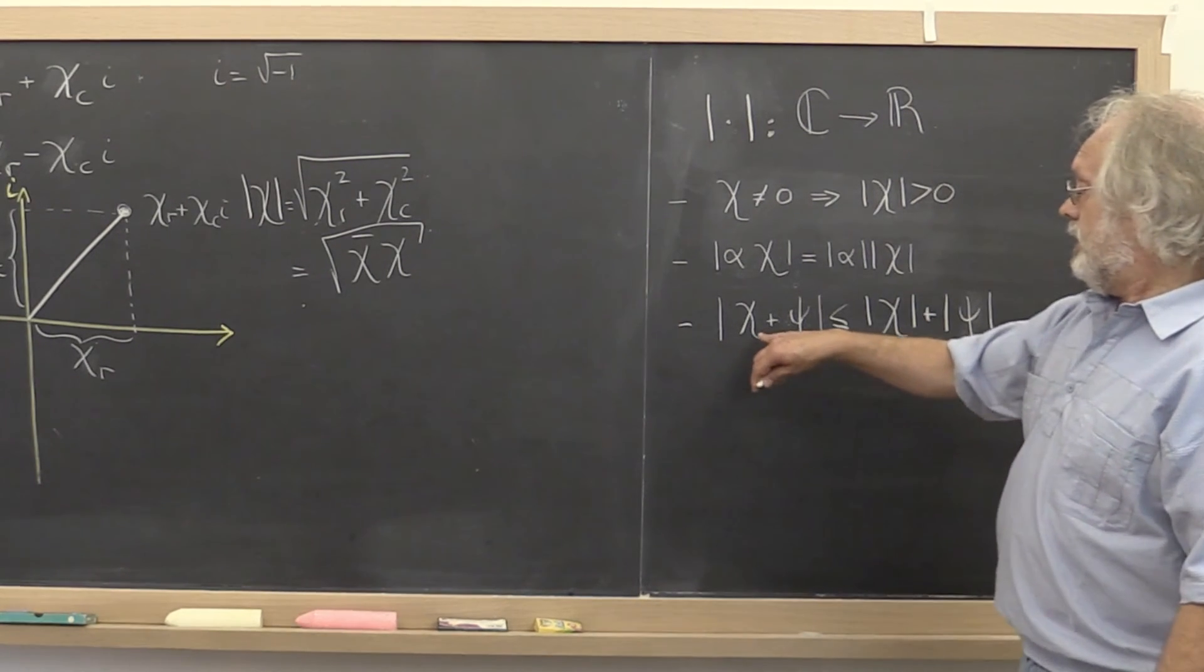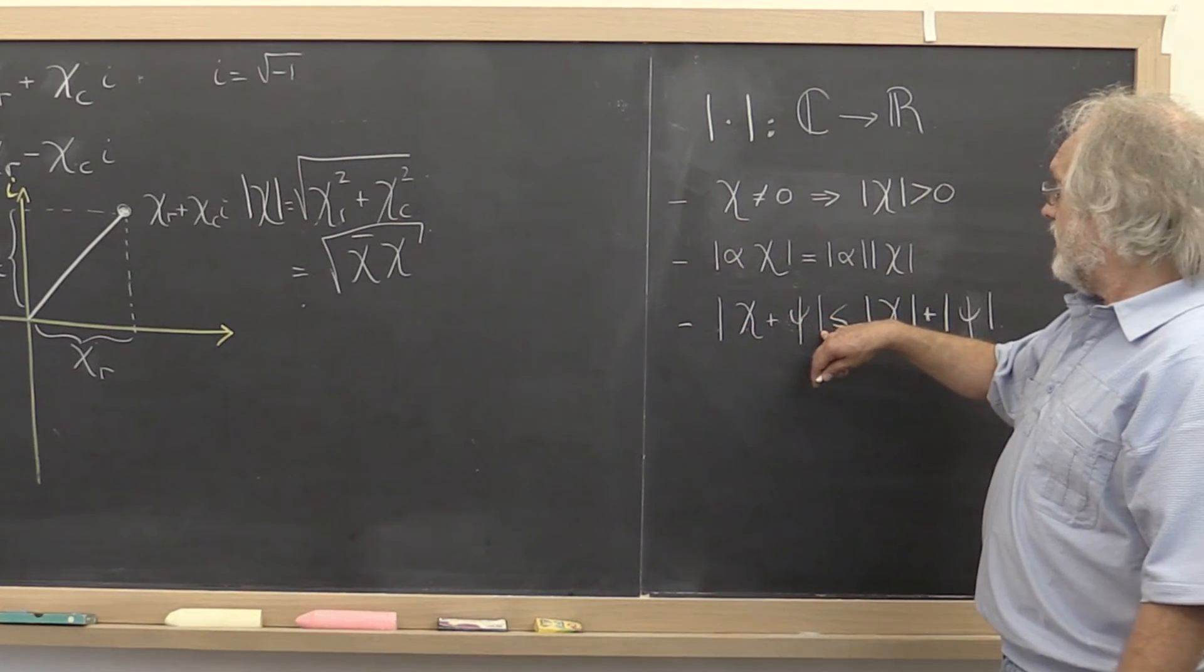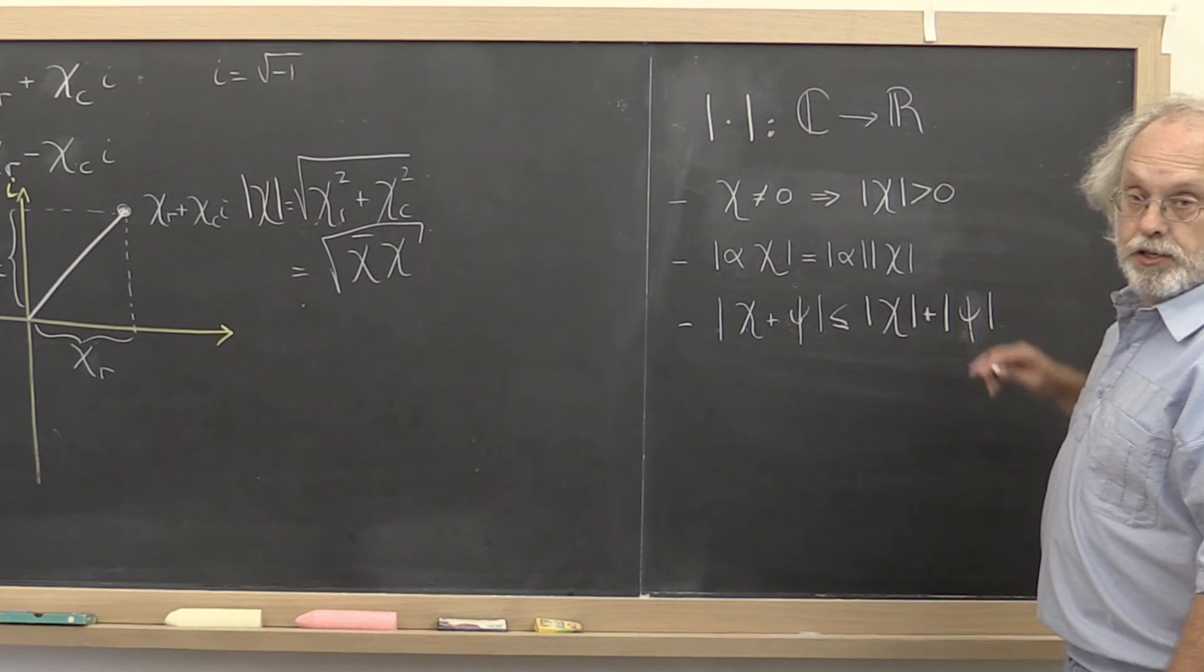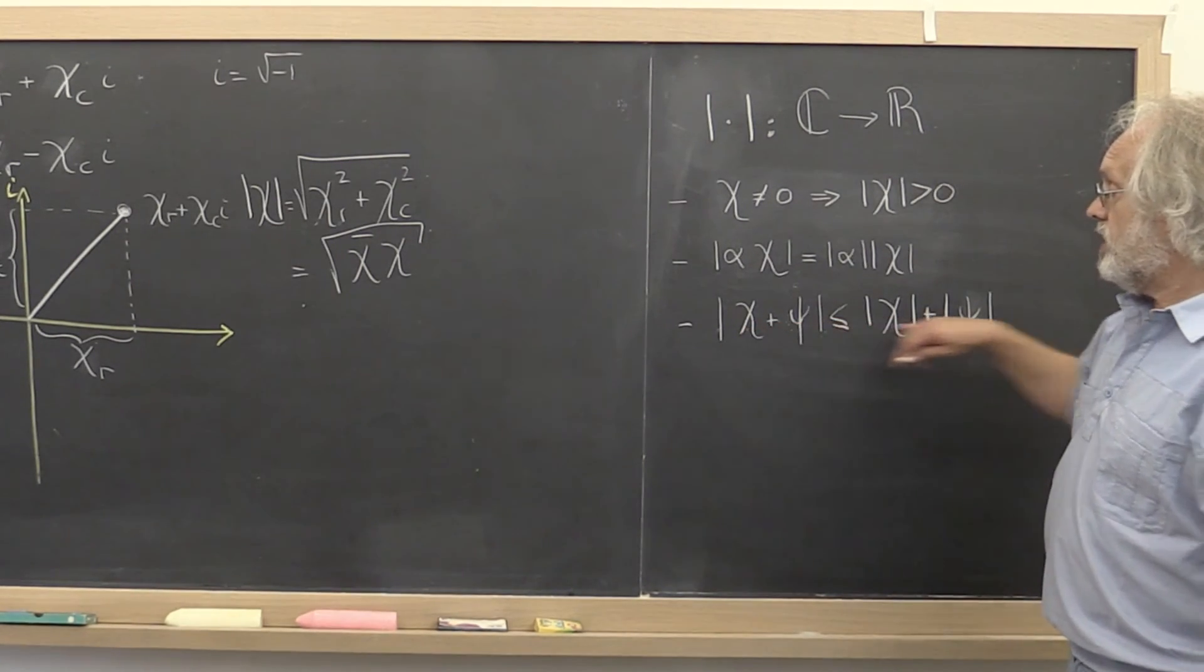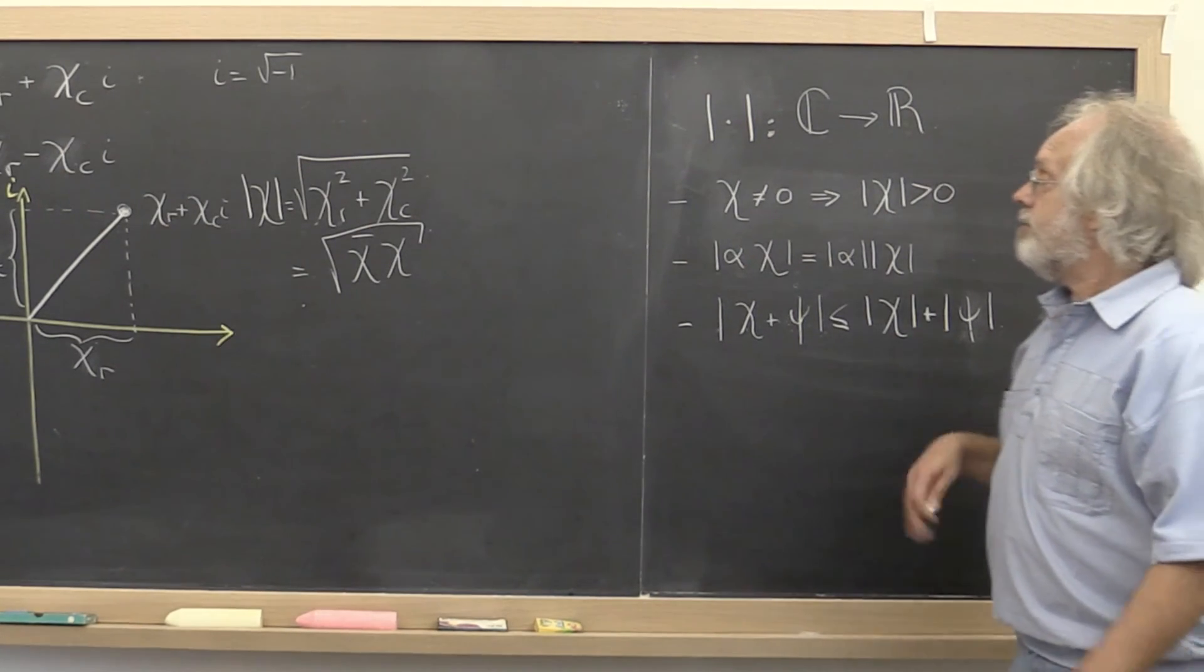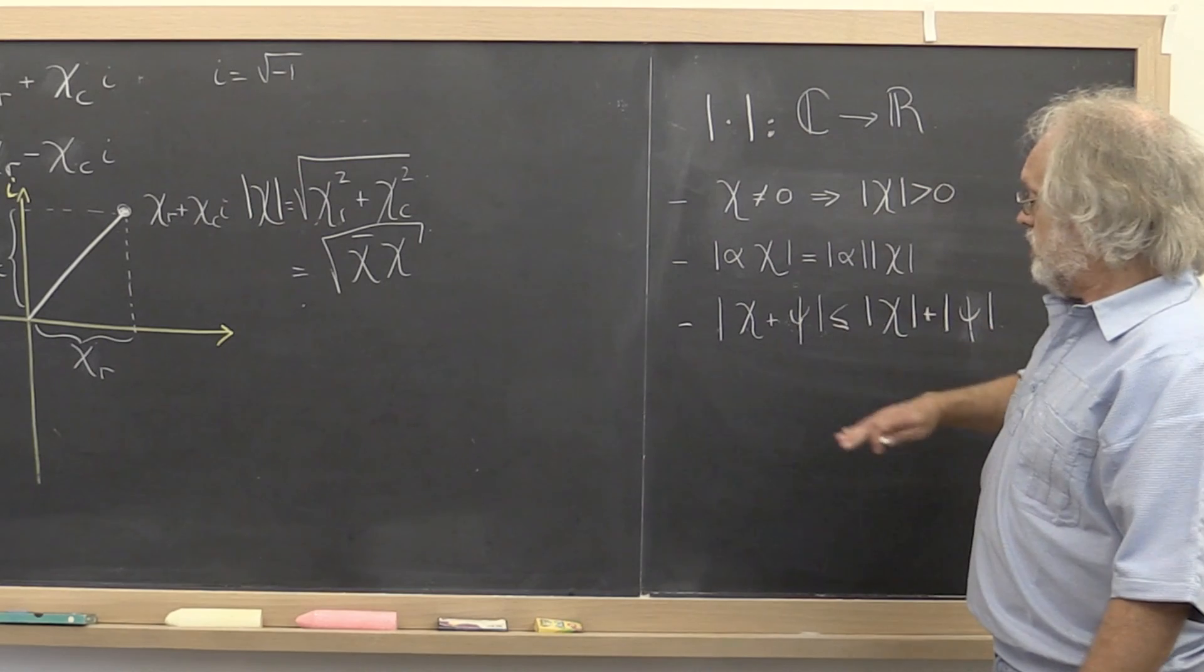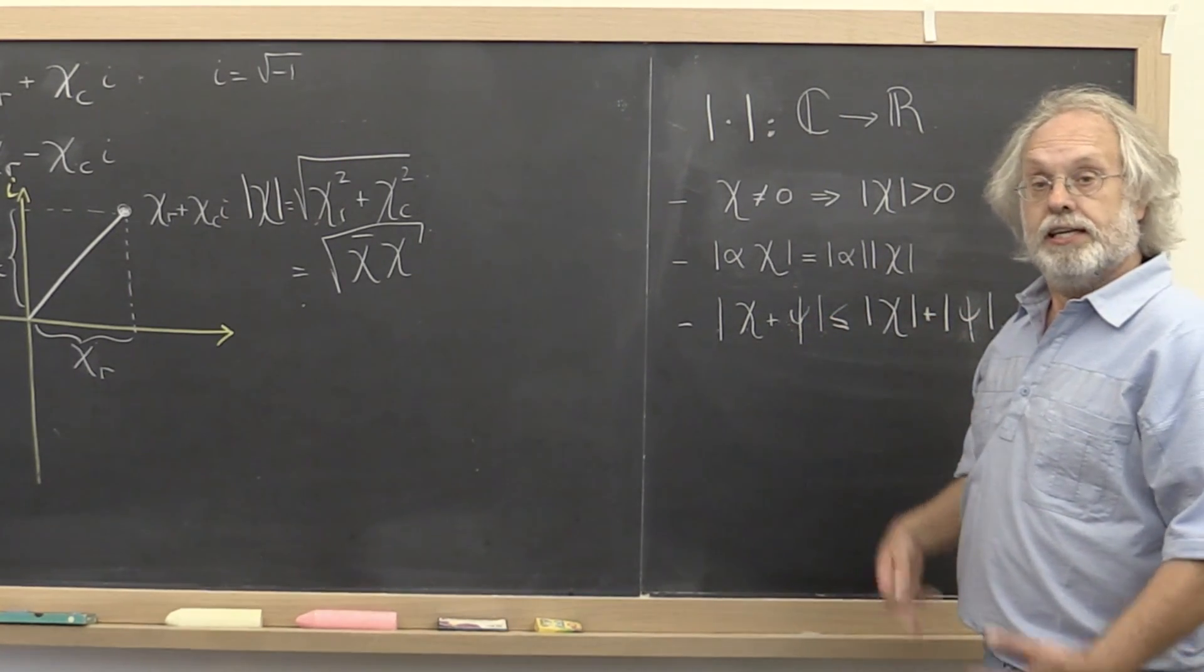And finally, if you add two complex numbers together and then you take the absolute value, then you get a number that's less than the absolute value of chi plus the absolute value of psi. This is the Greek lowercase letter psi. And that's known as the triangle inequality. And a function from some domain to the reals that is positive definite, homogeneous, and obeys the triangle inequality is a norm.